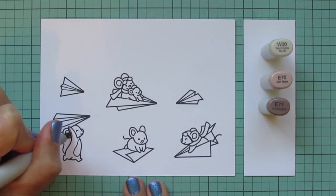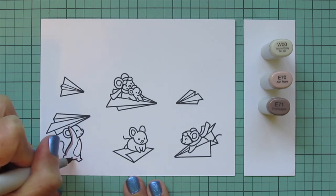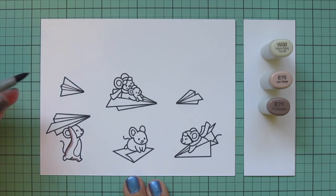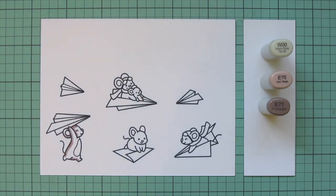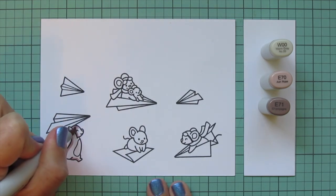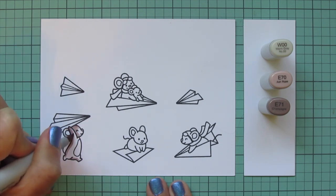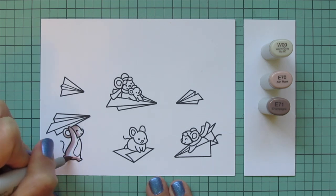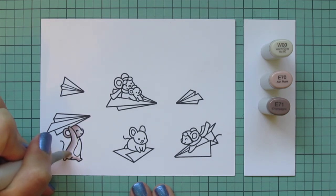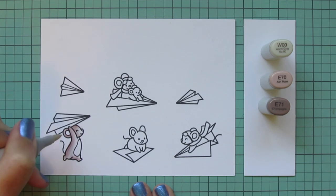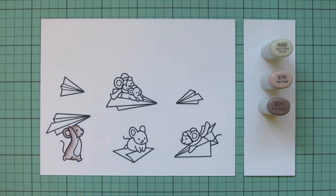I'm going to start with my mice and I'm going to use my favorite combo lately for mice. I really enjoy coloring them in this kind of grayish tone and I'm using W00, E70, and E71. I'm starting with that E71 and laying in some shadows and then I blend out with the E70 and then I use the W00 for the highlight area. I'll also use a little bit of the W00 on the belly and the inside of the ears.